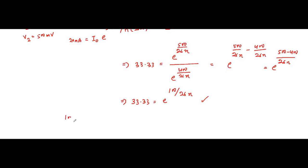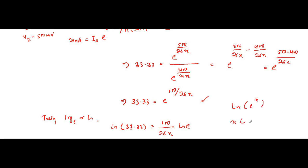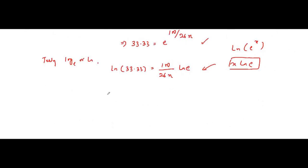Taking the natural logarithm on both sides: ln(33.33) = 100 / (26η) · ln(e). Since ln(e^x) = x·ln(e) and ln(e) = 1, this simplifies to ln(33.33) = 100 / (26η). Computing ln(33.33) gives approximately 3.506, so 3.506 = 100 / (26η).